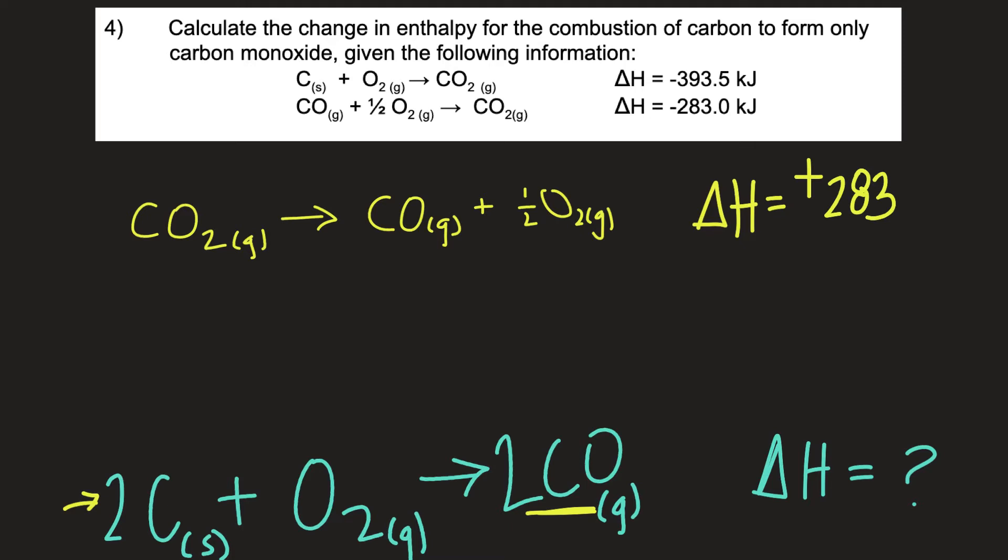Now if you look down here you see we have two carbon monoxides and here there's only one. So what we want to do is we want to multiply this entire equation by two. So we'll put a two in front of the carbon monoxide, a two in front of the carbon dioxide, and then we'll multiply the one half by a two so we just get a one in front of the oxygen. You're totally allowed to do that but whatever you do to the reaction you're also going to have to do to the delta H value. So it's going to be positive 283 times two.